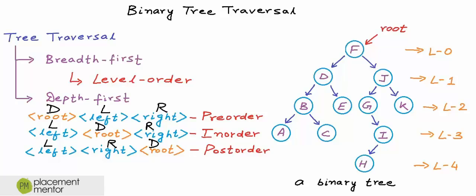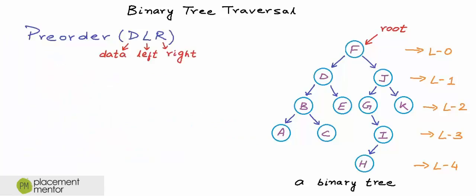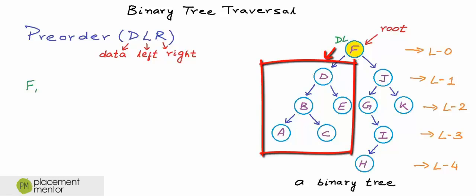Let's see what will be the pre-order traversal for this binary tree. We start at the root node — for each node we first read the data, so I am writing F here. Now I need to go left and finish the complete left subtree before going to the right subtree. Now we focus on the left subtree rooted at D. For D we first read the data. Then we go left to B, and for B we first read the data and go left to A. There is nothing in left or right of A, so A is done. Now left of B is done, so we go right to C. Left and right of C are null.